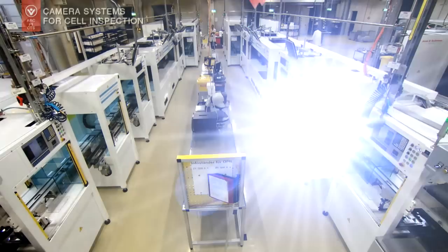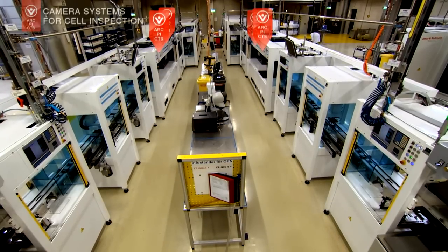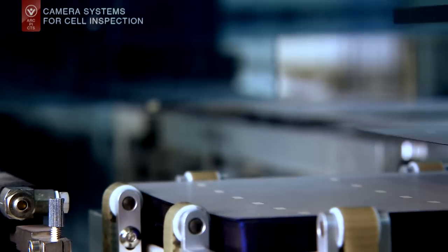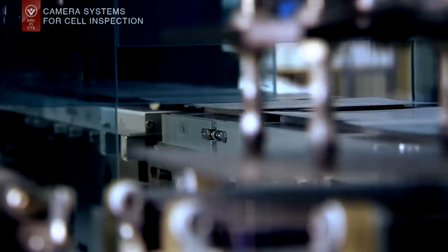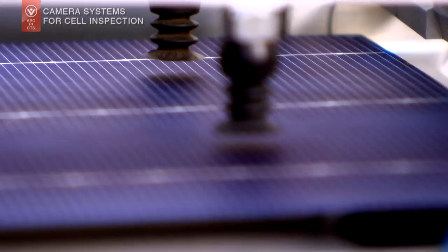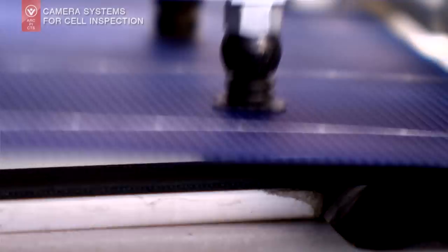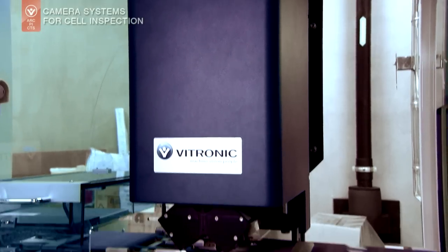Just like after metallization, Vitronic also implements a line scan camera in the cell tester for the front side inspection. The special feature: color cameras with four integrated sensor chips.